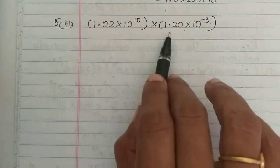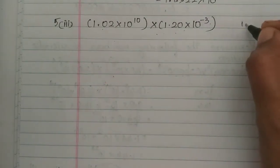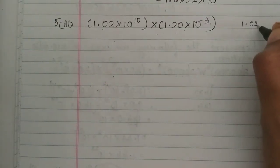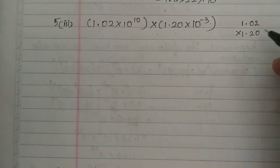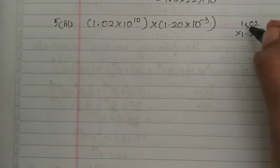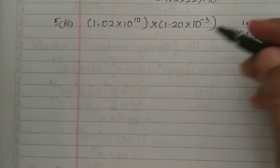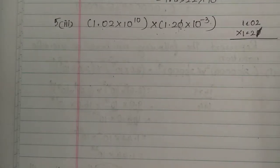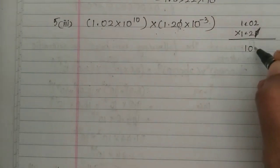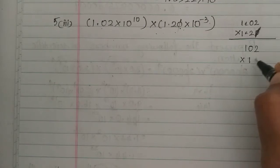So we multiply 1.02 into 1.20. The point is, we multiply. The point becomes 0, so we can cancel this 0. So we multiply 1.02 into 12.